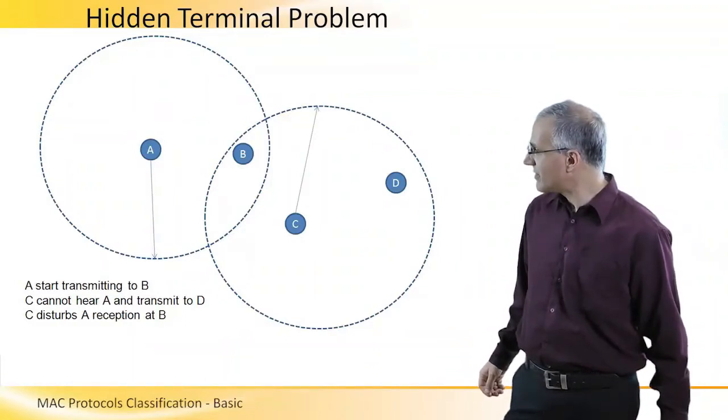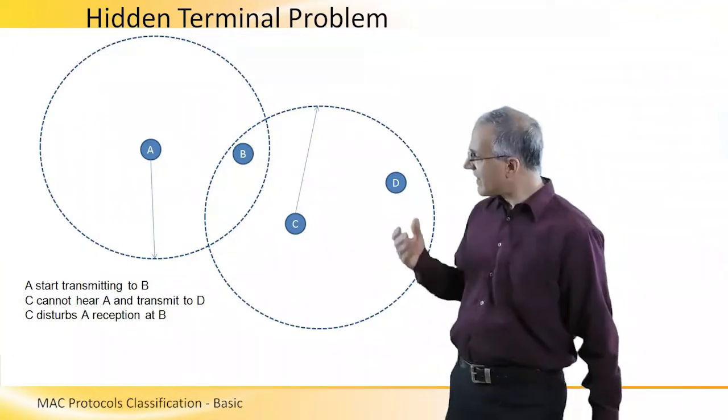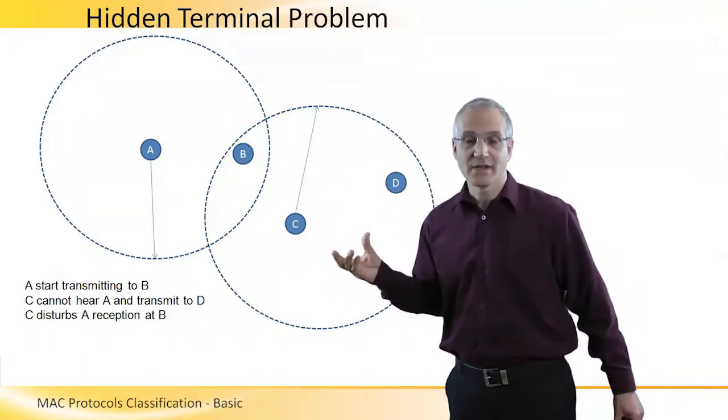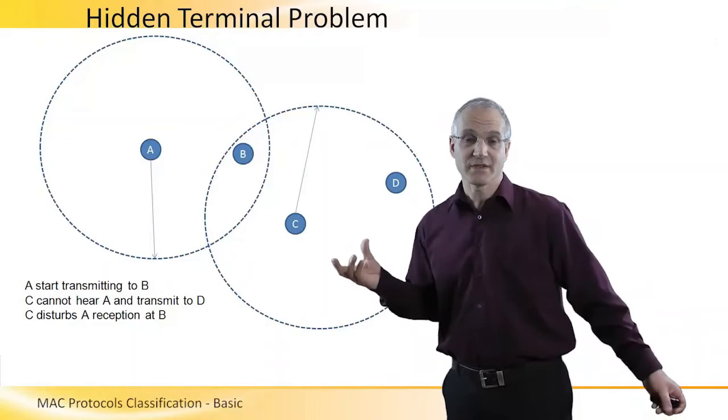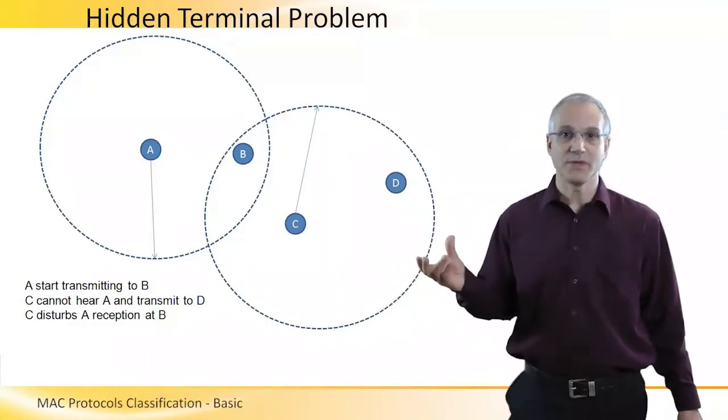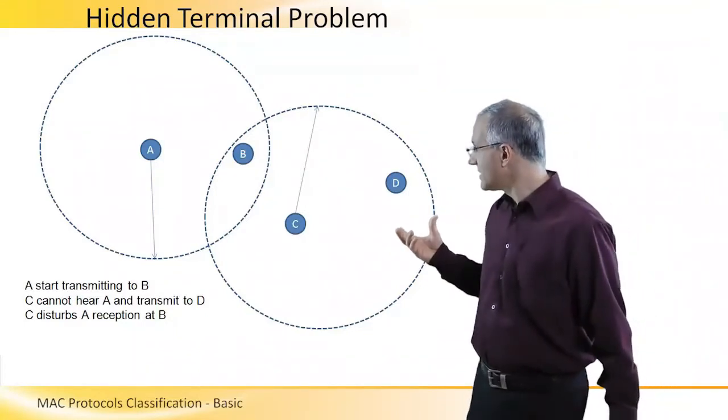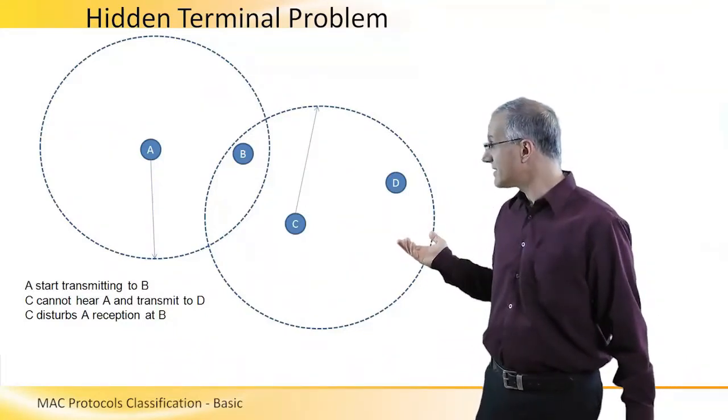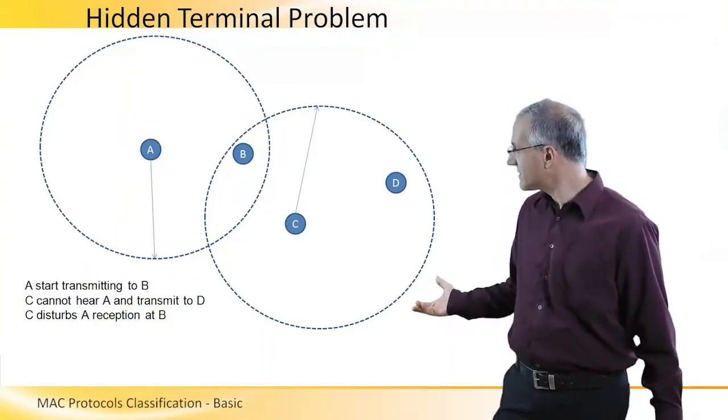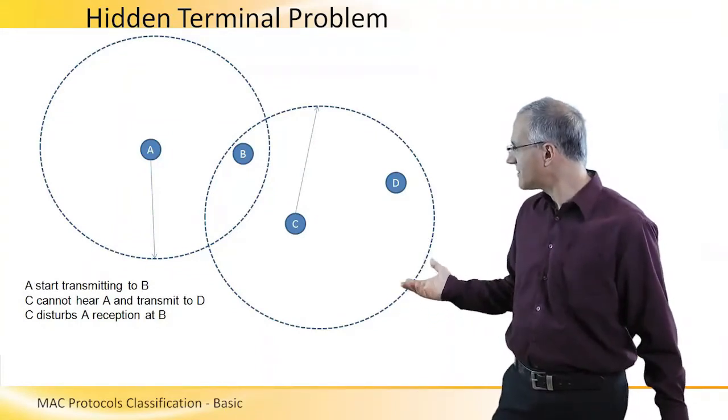However, A and C cannot hear each other. What happens is that suppose that A senses the channel, sees that it is not occupied and starts transmission to B. Now C comes in, senses the channel, since it cannot hear A, it sees that it is clear and starts transmitting to D.